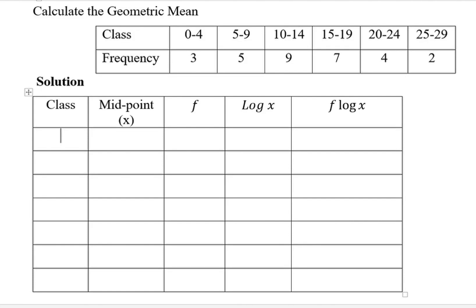In order for us to calculate the geometric mean for grouped data, we need to do it as follows. We need to come up with such a table which consists of five columns. The first column as indicated is for class, and what we fill under this class column are these classes that we have been given in the question. Therefore, we just fill them downwards like that.